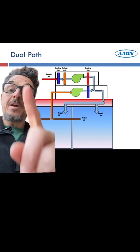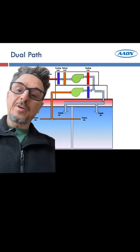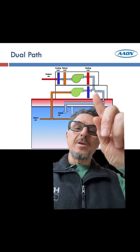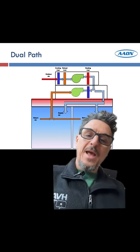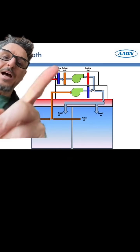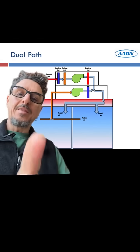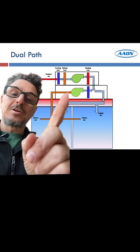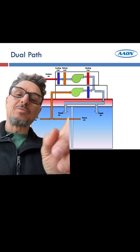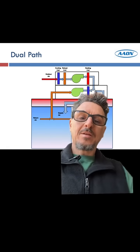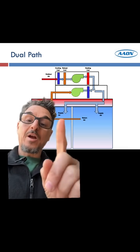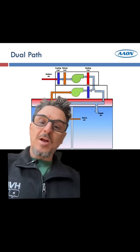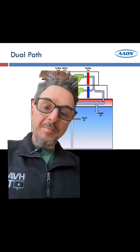Then you have what's called a dual path unit. We don't see these very often — these are more of a custom, specialized unit where everything's in one unit. You have a dedicated outdoor air path or air tunnel on top, and then the bottom path is taking the return air, providing the sensible cooling and mixing it with the outside air. This is a more custom and expensive application, typically better for larger single zone applications.